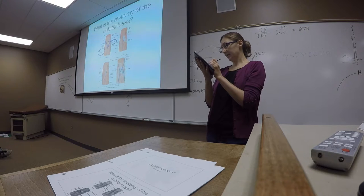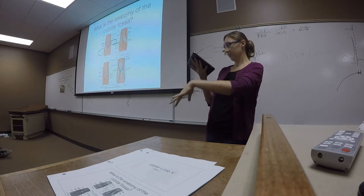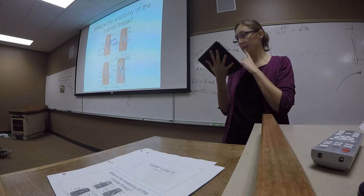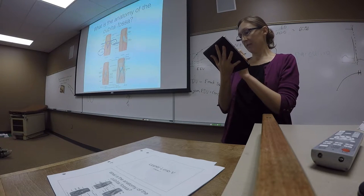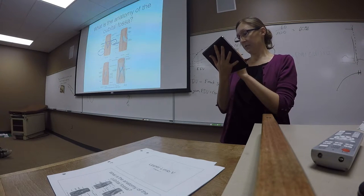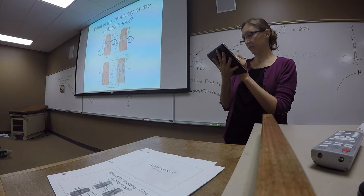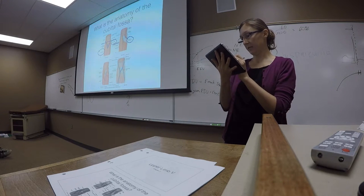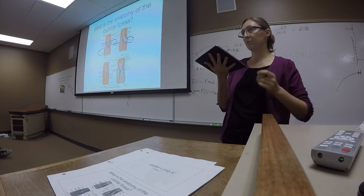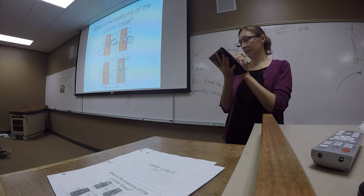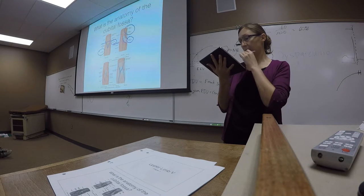We have the tendon for the biceps brachii coming down into the cubital fossa to its attachment point, and then we have the bicipital aponeurosis, which is that flatter, broader part of the tendon that wraps over some of the deeper structures of the cubital fossa, namely the brachial artery and the median nerve.